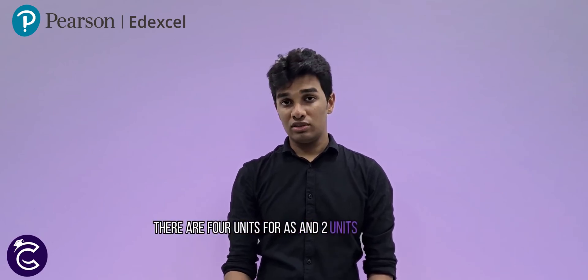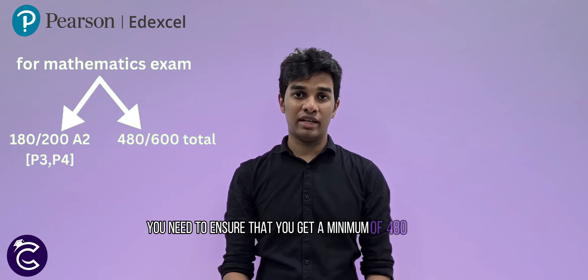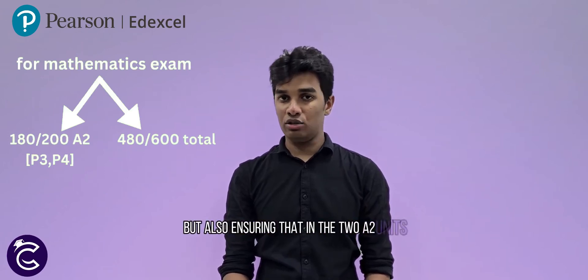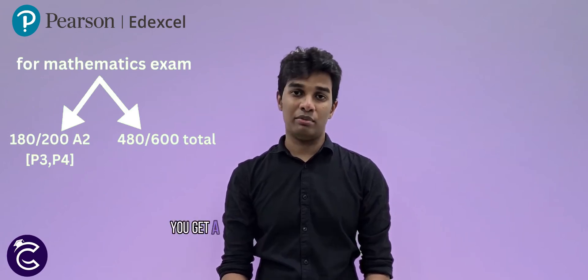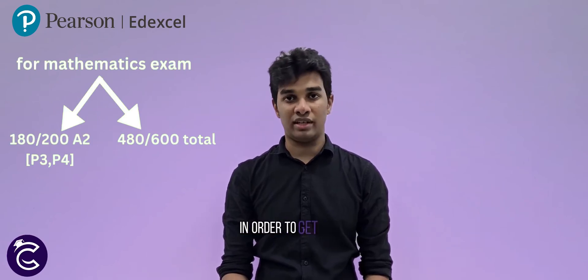For subjects like mathematics, where there are 4 units for AS and 2 units for A2 — those 2 units being P3 and P4 — you need to ensure that you get a minimum of 480 marks overall, but also ensuring that in the 2 A2 units you get a minimum of 180 marks.